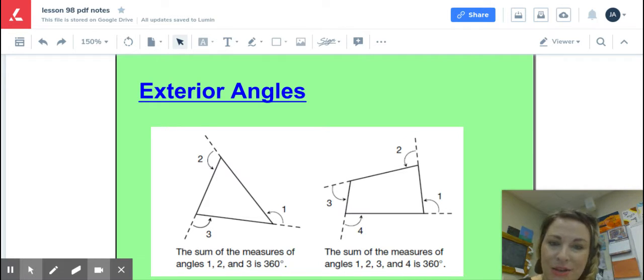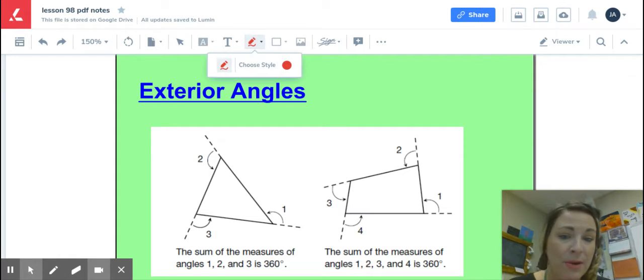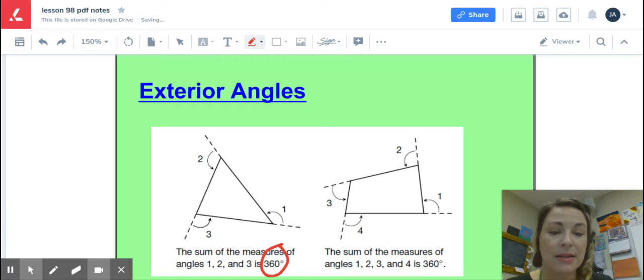So looking at these exterior angles, it's just when it's as though you were to extend all of the lines or the sides out in a polygon. If you were to do that, that's why those lines are dotted. If you were to do that, those create angles. And the important thing for you to know about that is that the sum of the measures of the exterior angles of either a triangle or a quadrilateral every time will always equal 360 degrees.